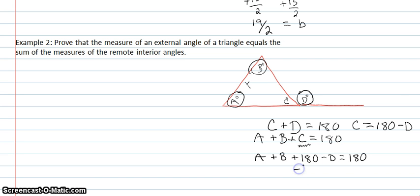Then I'm going to subtract 180. So, a plus b minus d equals 0. And then I'll add d to both sides.